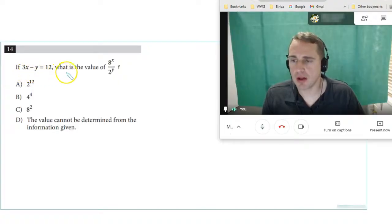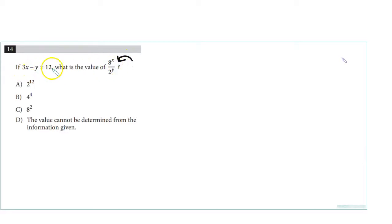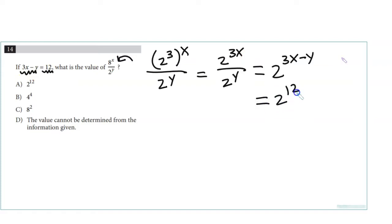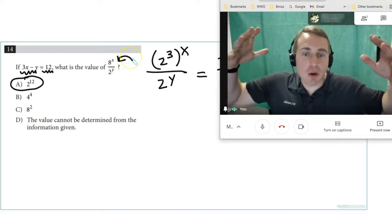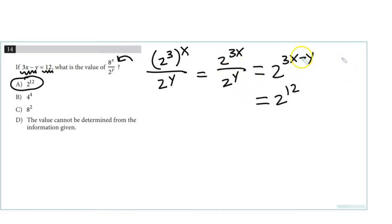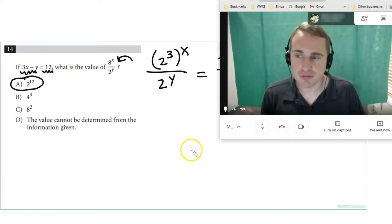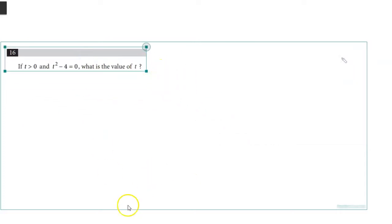Number 13: If 3x minus y equals 12, what is the value of 8^x over 2^y? This requires a little bit of cleverness. 8^x is the same as 2³ raised to the x, because 2³ is 8, over 2^y. Notice we can multiply these. So we have 2^(3x) over 2^y. That's 2^(3x-y). But wait, now it makes me happy because 3x minus y is 12. So this is 2^12, and that's our answer. You had to write 8 as 2³, multiply powers, and because you're dividing you subtract the powers, and 3x minus y was waiting for you.